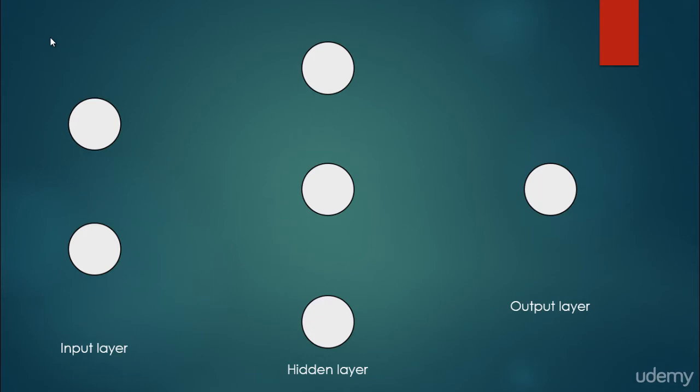So far we have seen how to construct an AND logical gate neural network, or how to train this network if the edge weights are not appropriate. But there are several much more complex neural networks with hidden layers. A typical neural network consists of an input layer, one or more hidden layers — usually just a single hidden layer — but for example Google's deep learning uses several hidden layers, and of course an output layer.